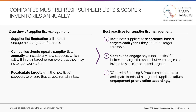As your business evolves, so will your supplier list. It is critical to ensure that new suppliers are captured and engaged as part of your supplier engagement program. You should update your supplier list annually to include new suppliers which fall within your target, or remove any suppliers which you no longer work with. After doing this, you should recalculate your targets with the new supplier list to ensure that you are still meeting your threshold. For example, if you set a target to have 70% of suppliers, by emissions, set science-based targets, then you should ensure that the suppliers included in the new list still meet that goal.